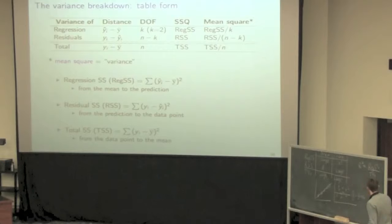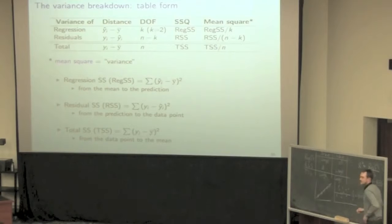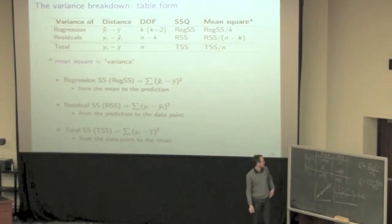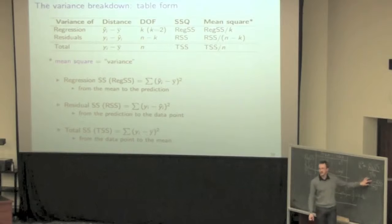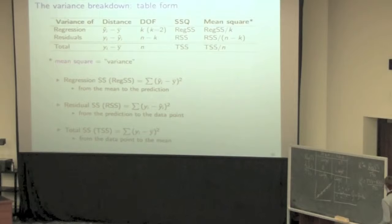Recall that R-squared is equal to the regression sum of squares divided by the total sum of squares. Another way to write that is: the regression sum of squares equals the total sum of squares minus the residual sum of squares, divided by the total sum of squares. That RSS is going to be the key focus of today's class. I'm going to show you an interesting relationship between R-squared and standard error using that.